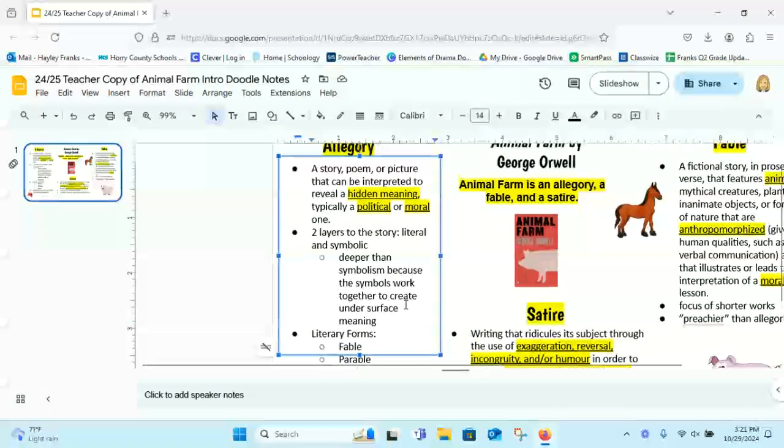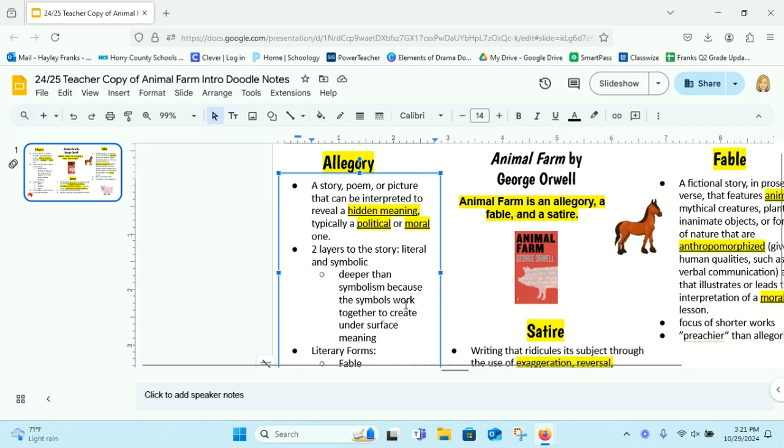So with allegory, you're just thinking two layers that there is a hidden political or moral meaning. We're going to slide on down here to satire.